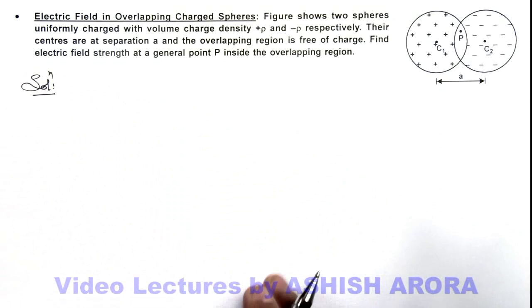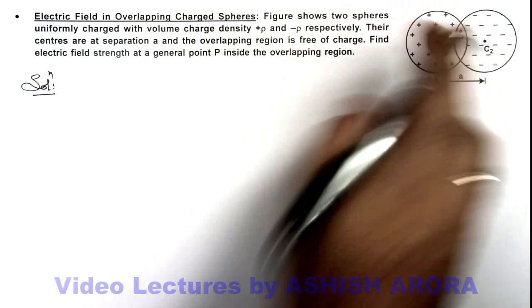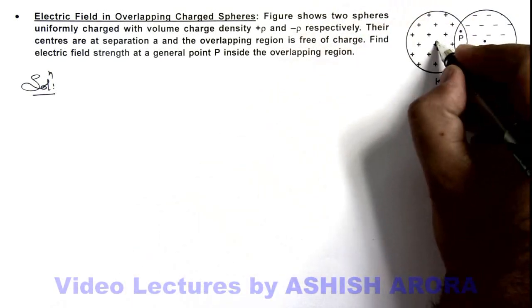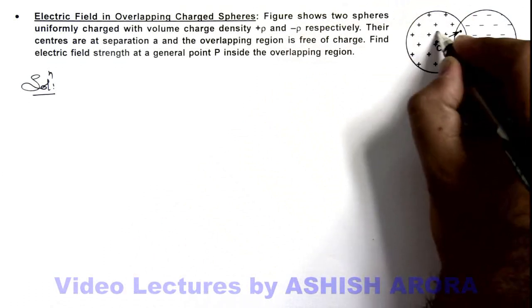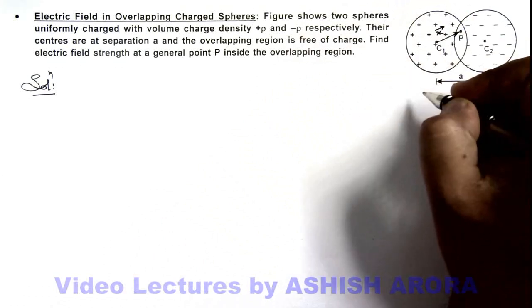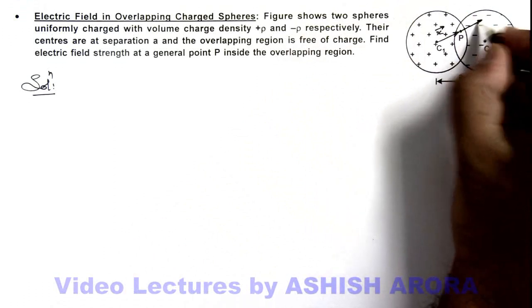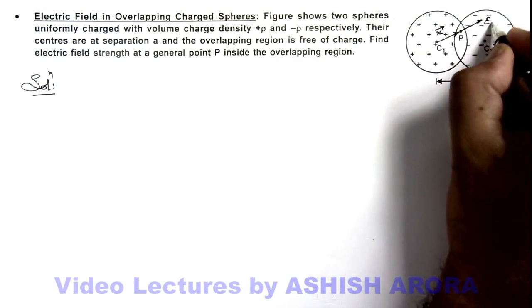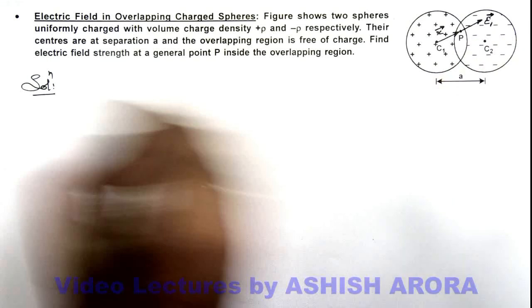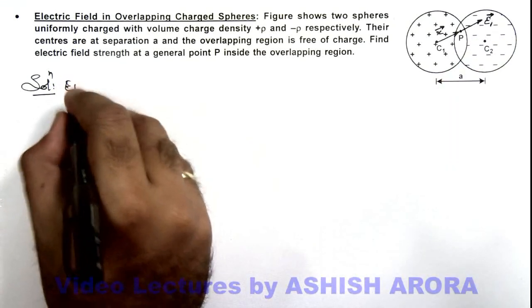So here we assume if this is a complete positively charged sphere and point P is located at a position vector x, then due to the positive charge here electric field is in this direction. We write it as E₁ vector. So we can write electric field at P due to positive charge.